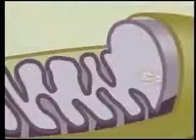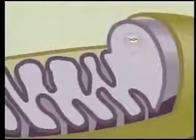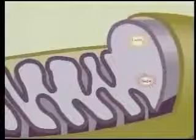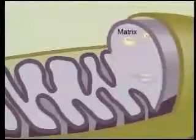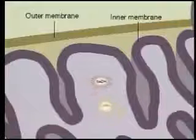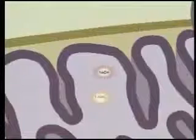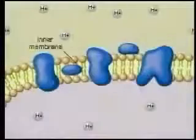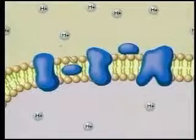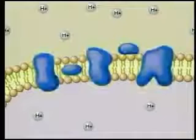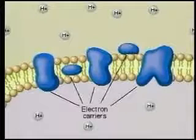Most of the energy a cell harvests during the Krebs cycle is held in energy carriers such as NADH and FADH2. These energy carriers stay within the matrix of the mitochondrion. They transfer their high-energy electrons to proteins on the inner membrane, which separates the matrix from the outer compartment. Large proteins embedded in the inner membrane are the electron carriers in the electron transport chain.